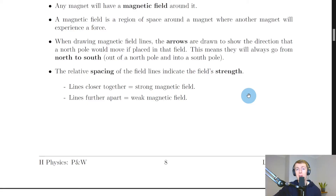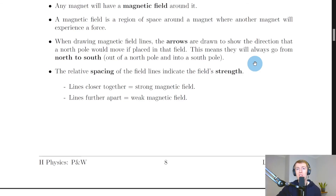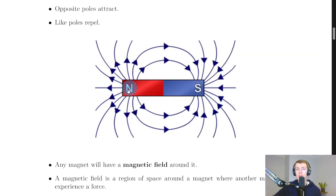Just like for electric field lines, we have rules for drawing magnetic field lines. The arrows are drawn to show the direction that a north pole would move if placed in that field, which means they always go from north to south — out of a north pole and into a south pole, just as they go out of a positive charge and into a negative charge. The relative spacing of the field lines indicates the field strength: lines closer together means a strong magnetic field, and lines further apart means a weak magnetic field. Looking at a diagram, at the poles where lines are closest together the field is strongest, whereas further away or in the middle the lines are more spaced out, indicating a weaker field.